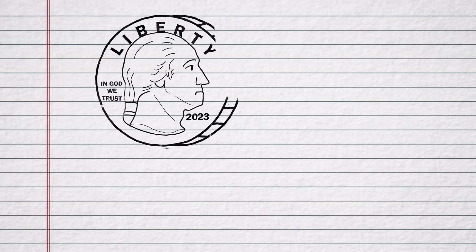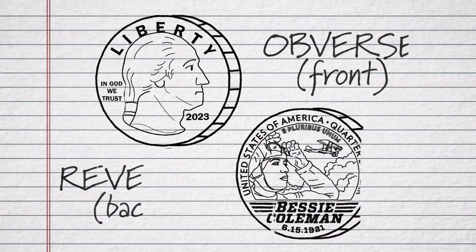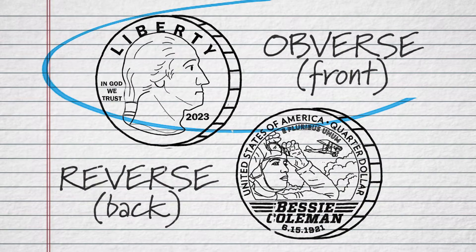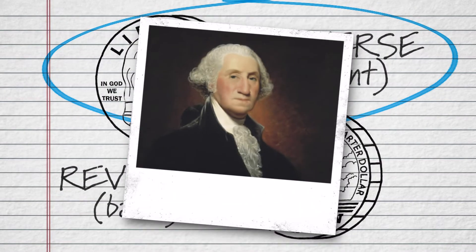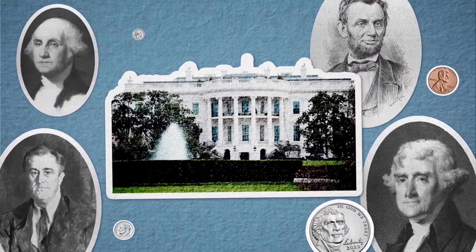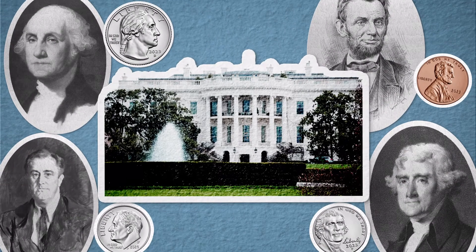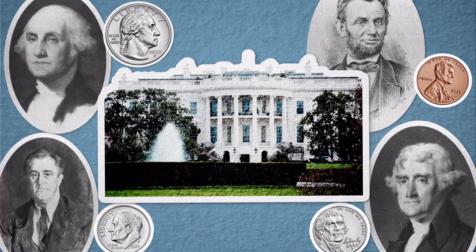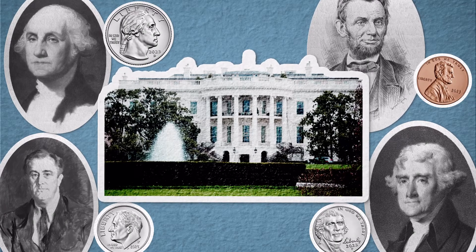On the obverse, or front of coins, you'll often find a person's portrait or picture. For circulating coins, or the coins we use in daily life as money, the face you see on the obverse is a past president of the United States.